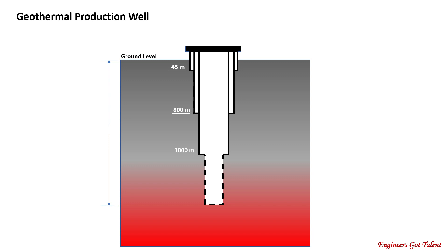First up is the geothermal production well. Geologists pick the right spot to drill a production well based on pressures and temperatures that are potential to become a geothermal reservoir. The production well conducts geothermal fluid from the reservoir to the surface. It has a set of casings made of carbon steel pipes set and cemented inside the drilled hole. The conductor pipe is driven or hammered to the ground down to 45 meters to protect the well from loose near-surface unconsolidated soil and rocks, and to prevent the infiltration of groundwater and rainwater into the well. Next is the surface casing which isolates the freshwater aquifers. It is cemented in place and provides protection in case of a well blowout.